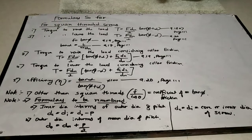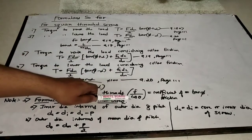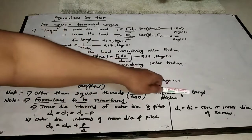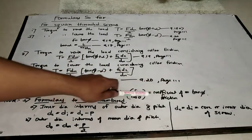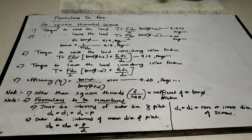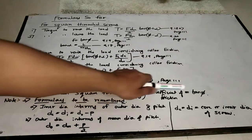If the threads are other than square threads, the coefficient of friction f is replaced by f/cos θ, such that f/cos θ = tan φ. We have seen the proof and diagrams for how this changes depending on the thread angle.